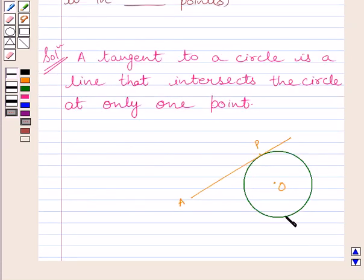Clearly we can see this is a circle with center O and AP is a tangent to the circle. AP intersects the circle only at one point that is V.